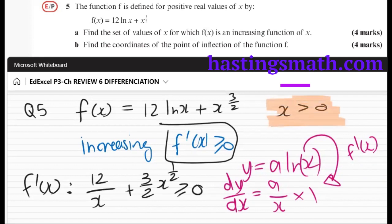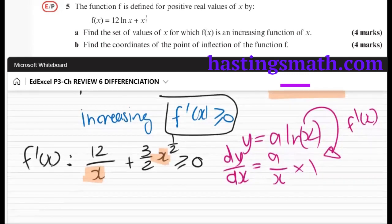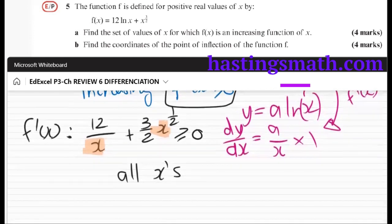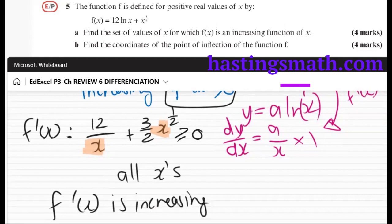We had that x is always positive, so x is larger than zero. If you put in positive values for x here, this will never be negative. So all positive x's are options. Okay, so the final answer is just to write that our function f is increasing for all x, as long as x is positive, which is what we were given.